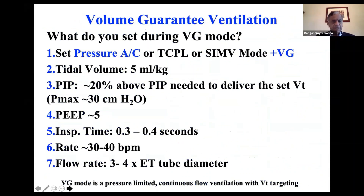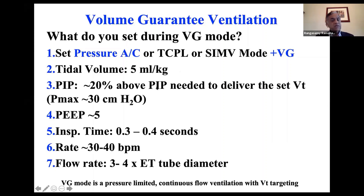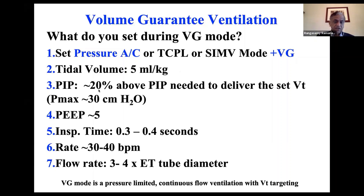How do you set VG mode? You can use either pressure AC, assist control, TCPL, or SIMV as the backup mode and then add plus VG. Tidal volume is generally about 5 ml per kilo. PIP should be set 20% above the PIP needed to deliver the set tidal volume — in general, set Pmax at 30 centimeters, which is the maximum PIP pressure the ventilator can use. PEEP is 5 or 6. Inspiratory time is 0.3 to 0.4 seconds; I normally use 0.4 seconds.